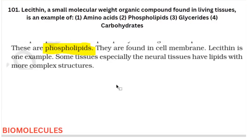The first question is about lecithin — they are basically asking what lecithin is: whether it is an amino acid, phospholipid, or carbohydrate. From the biomolecules chapter, this is the line from where this question is taken. There is a definition for phospholipids, and along with that they have given lecithin as one such example. So it is basically a direct question.